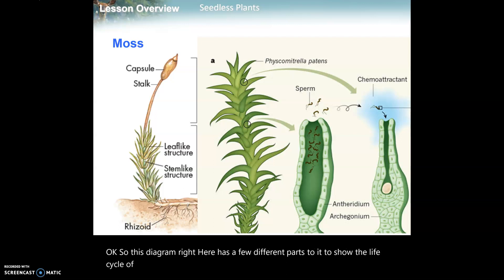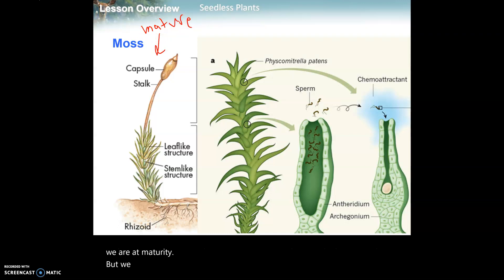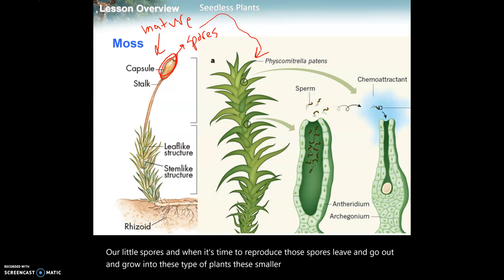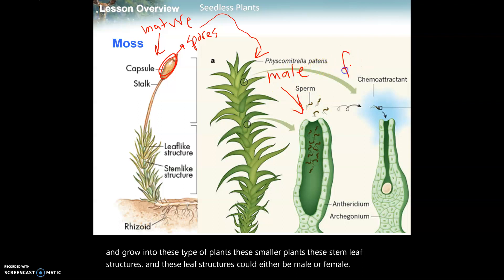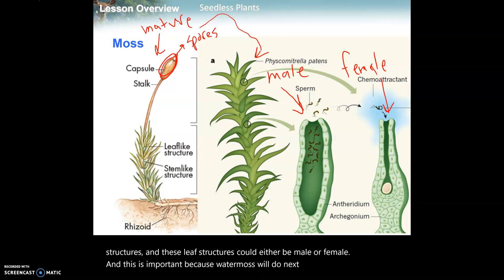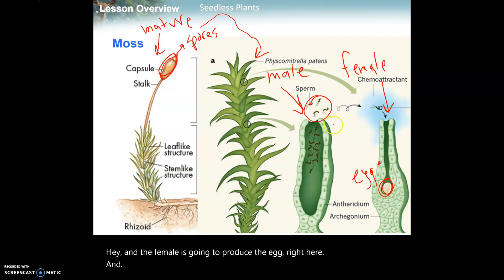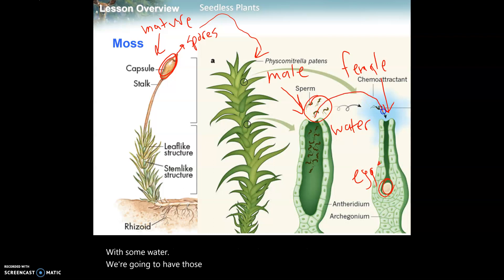This diagram shows the life cycle of a moss. Here's the full mature structure on the left. Inside the capsule are little spores, and when it's time to reproduce those spores leave and grow into smaller stem-like leaf structures. These leaf structures could either be male or female. The male part that grew from a spore grows sperm, and the female produces the egg. With some water, those sperm make their way across to the female egg to grow into a mature moss again.